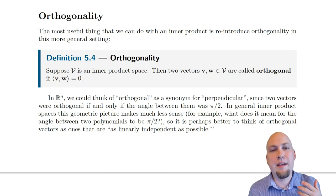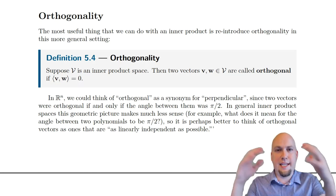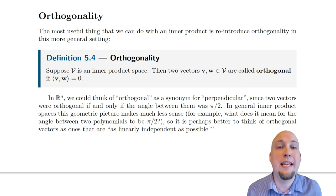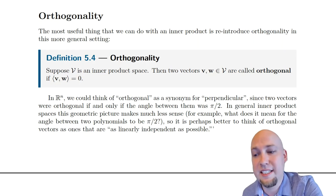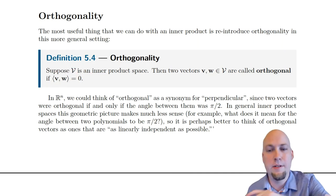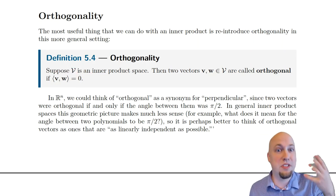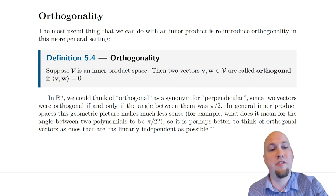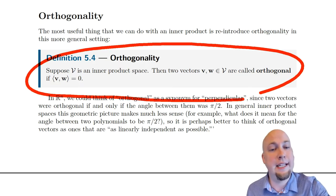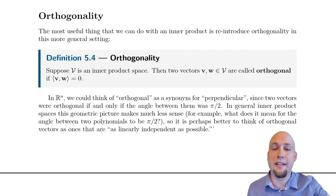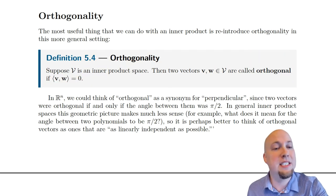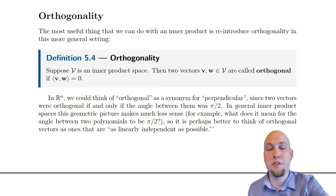Now that we have inner products to work with as a generalization of the dot product, we can do the same sort of thing in arbitrary vector spaces. We can talk about orthogonality in arbitrary vector spaces via this idea that the inner product — now instead of the dot product — equals zero. So this is our starting point for this lecture. Orthogonality in any inner product space: we say that two vectors are orthogonal if their inner product equals zero.